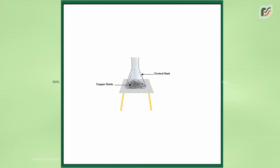Take a small amount of copper oxide in a conical flask. Observe its color. Add dilute H2SO4 to it slowly.